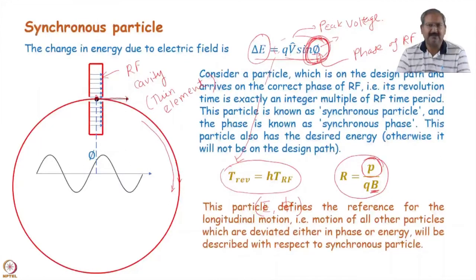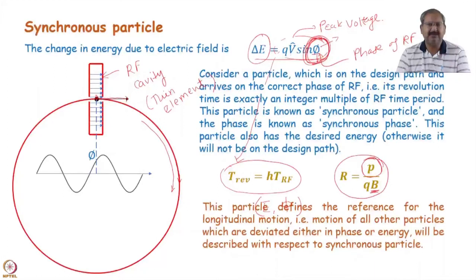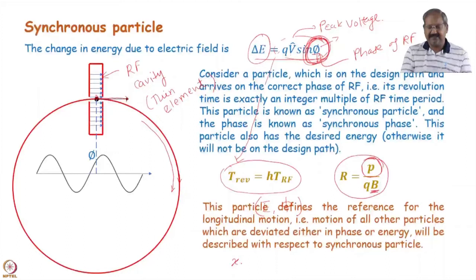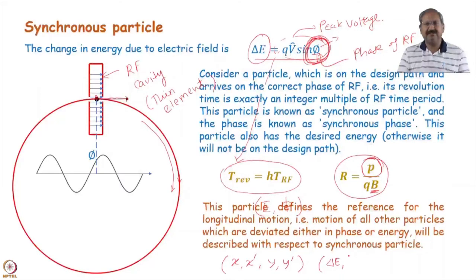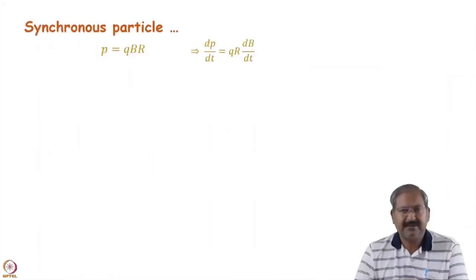Just as in transverse dynamics we studied motion with respect to the design trajectory using displacement and angle, in longitudinal dynamics we talk about energy deviation from the synchronous particle and phase deviation from the synchronous phase. So δE and δφ form the coordinate plane for longitudinal dynamics. Together with x, x', y, y', these six coordinates make the complete state of the particle.